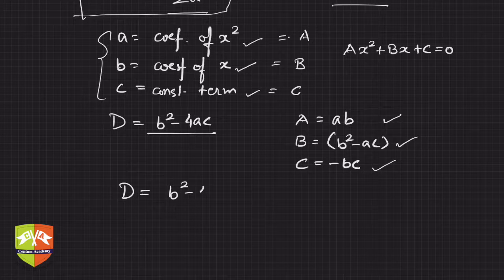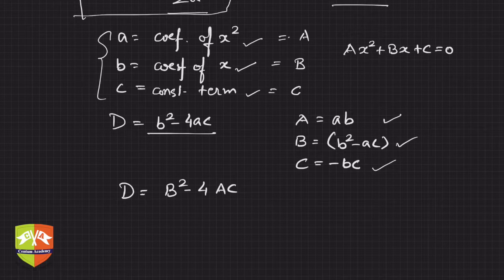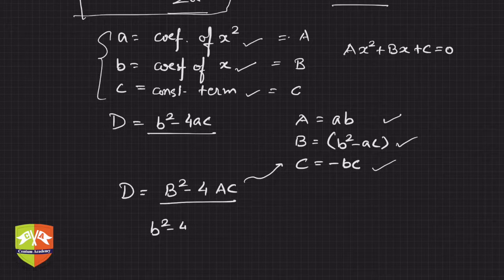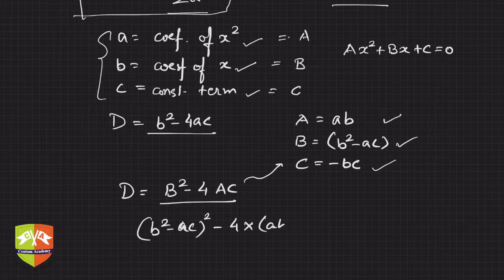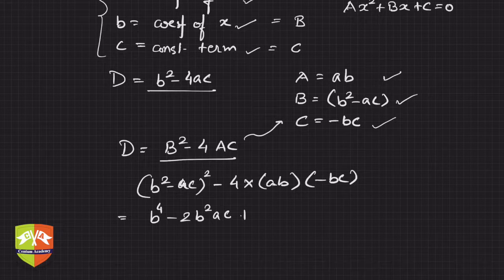I should write capital letters now since we are using capital A, B, C for the equation. So D is capital B² minus 4 times capital A times capital C. Capital B² will be (b² minus ac)² and minus 4 times ab times (minus bc). Opening the brackets, we get b⁴ minus 2b²ac plus a²c².